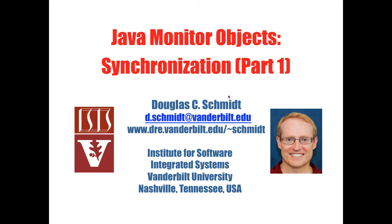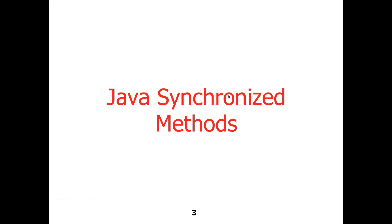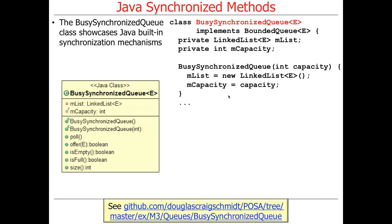Now that we've motivated why we need synchronization and monitor objects in general, let's talk about a specific part of what monitor objects provide, which is essentially synchronization. We're going to talk first about synchronized methods provided by the Java built-in monitor objects in order to support mutual exclusion, which is protecting shared state in critical sections.